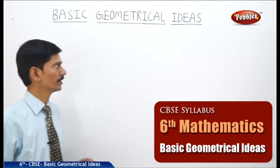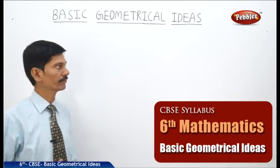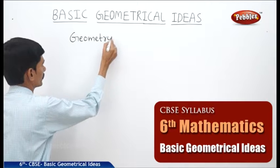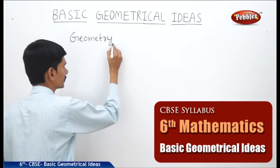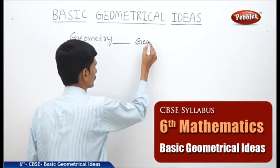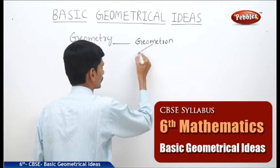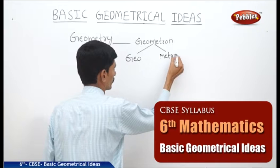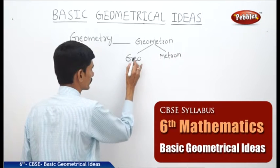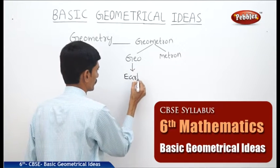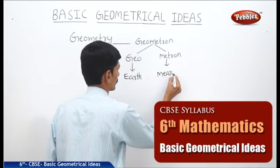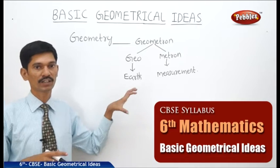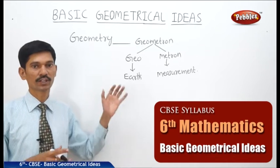Let us start the next chapter: Basic Geometrical Ideas. The English word 'geometry' is derived from the Greek word 'geometron,' which is formed from two words — 'Geo' meaning earth and 'metron' meaning measurement. So geometry was widely used to measure the lines in ancient days.